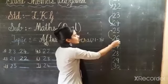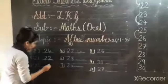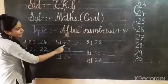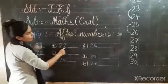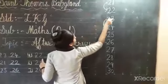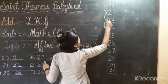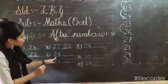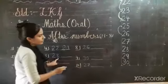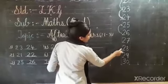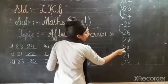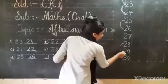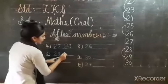Now 26, 26. I'll write here: 26, 26. Then after 22 — after 22 comes 23. This one is 28, 28. So 28, 28. After 28 — what will come? 29.